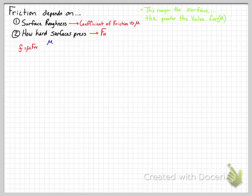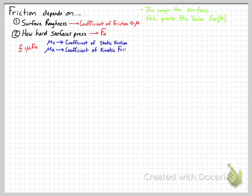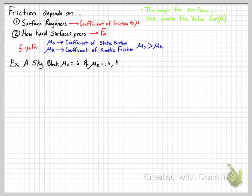The frictional force is calculated as F = μ × F_N, but since there are two types of friction, we need two coefficients: the coefficient of static friction (μ_s) and the coefficient of kinetic friction (μ_k). Both are mu, but each has a subscript. Typically, static mu is greater than kinetic mu — the force needed to overcome friction and get an object moving is usually greater than what is needed to keep it moving.